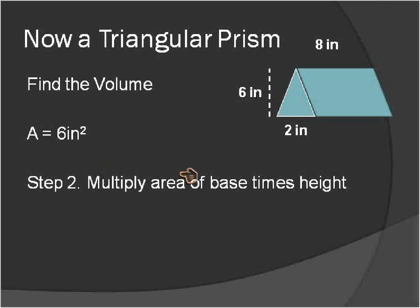We have our area. We're going to multiply the area of the base times our height, which in this case is 8 inches. And 6 inches squared times 8 inches will give us a volume of 48 inches cubed. That's going to be the volume of this triangular prism.